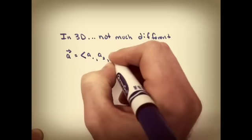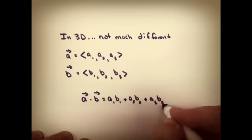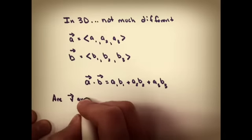In three dimensions, it's not much different. You just have three values for each vector, and you do it exactly the same way. Multiply your x values, add it to your y values, and then your z values.